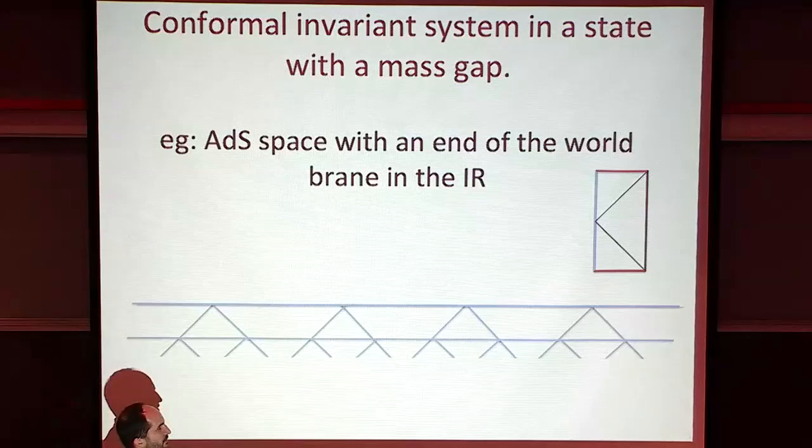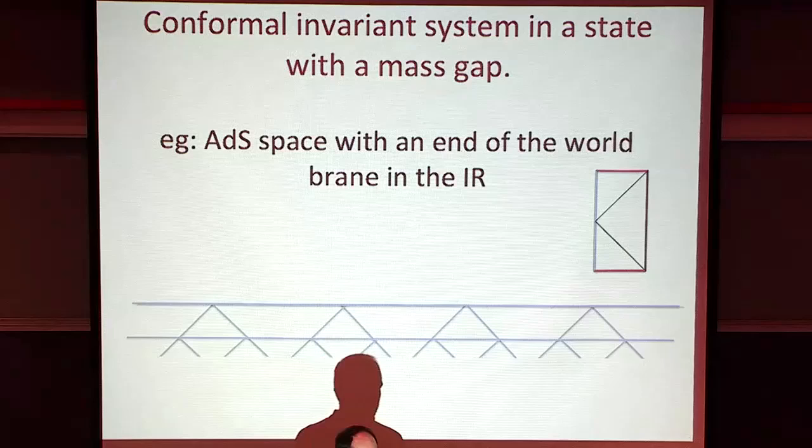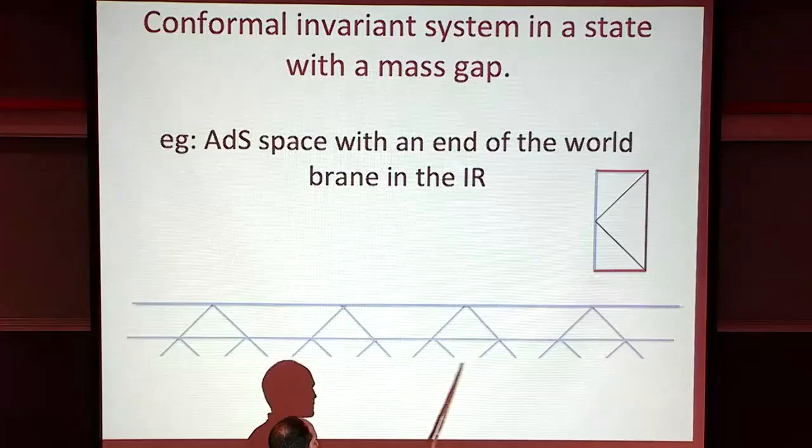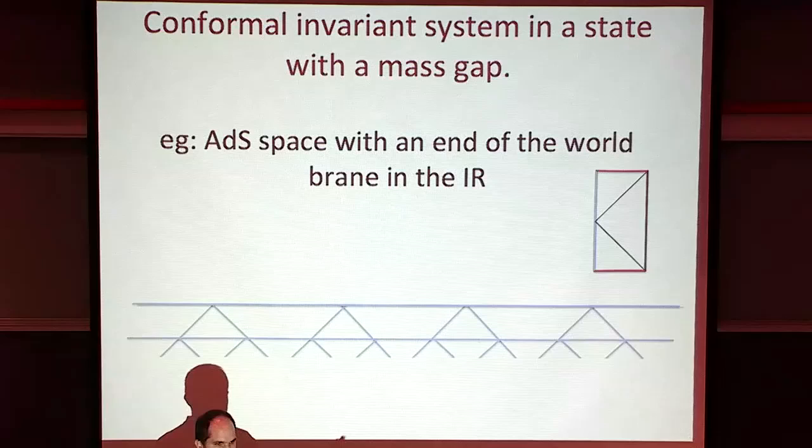The tensor network representing such a state: near the UV it would be the same as one of these scaling-invariant networks, and in the infrared it would be similar to the type of networks we got for a mass gap. This direction is the direction of space - I'm not representing time. This is a representation of the state at some particular time.